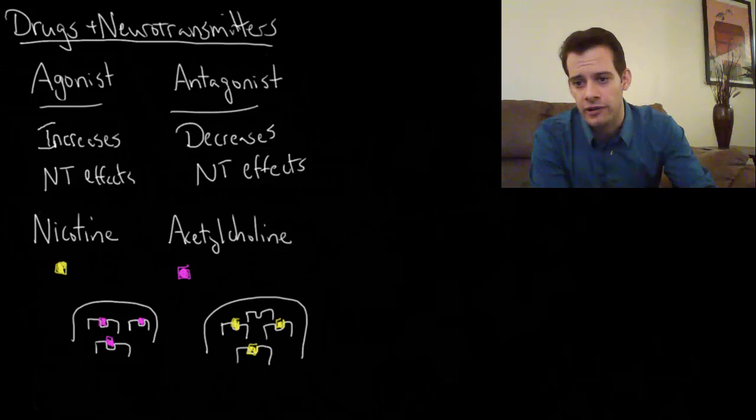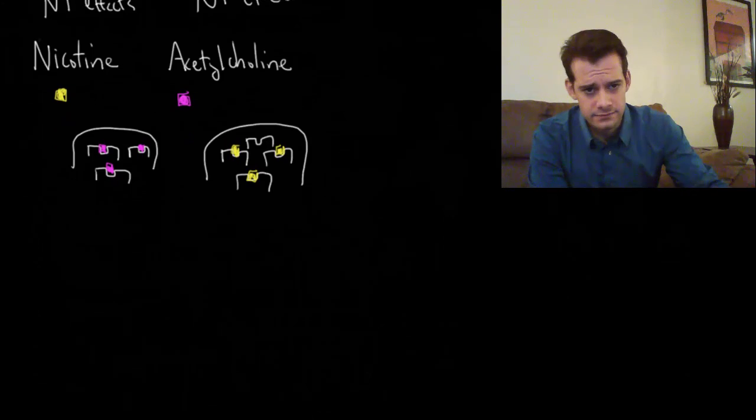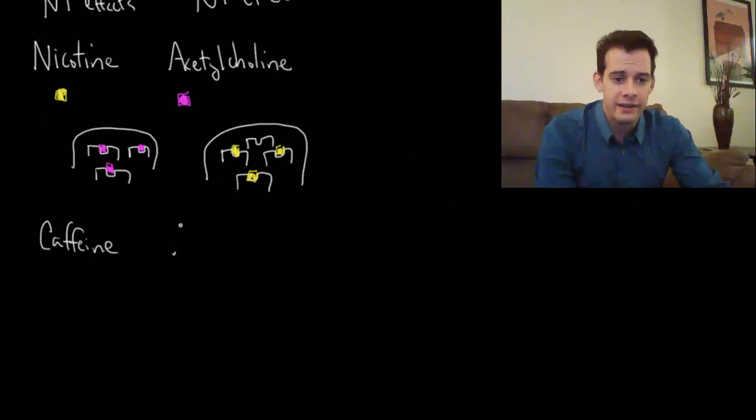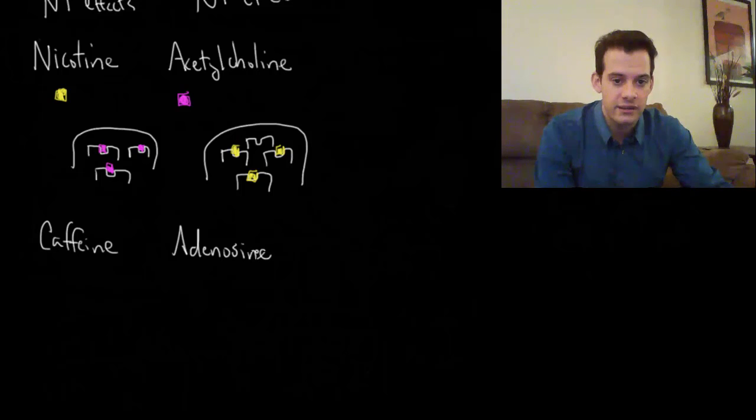Alright, let's look at another example of a drug. Another common drug, and this is one that you probably use. And this is because it's the most commonly used psychoactive drug in the world. And this is caffeine. So caffeine has a relationship with a neurotransmitter called adenosine. And this is a neurotransmitter that I didn't talk about in the previous video. But what adenosine does is it helps signal that we're tired. It helps induce feelings of drowsiness.